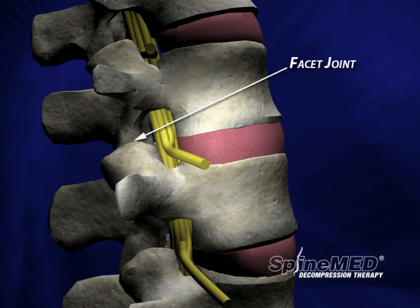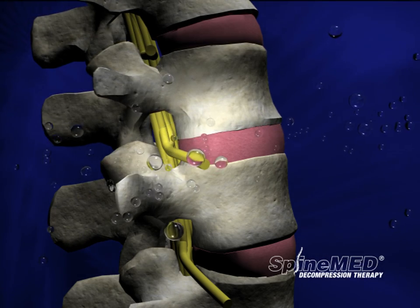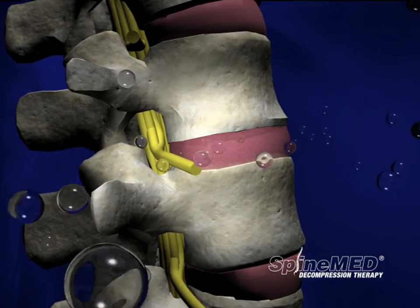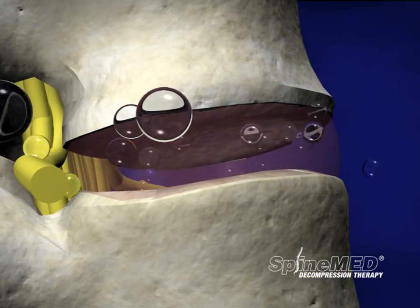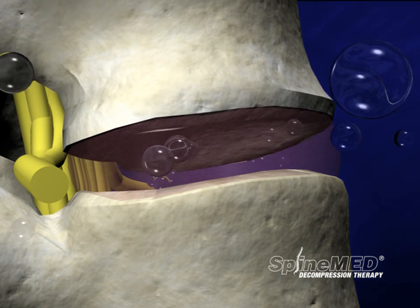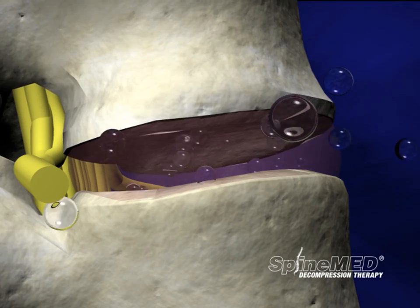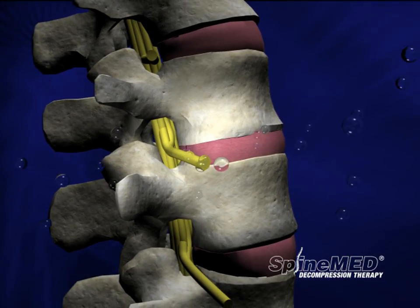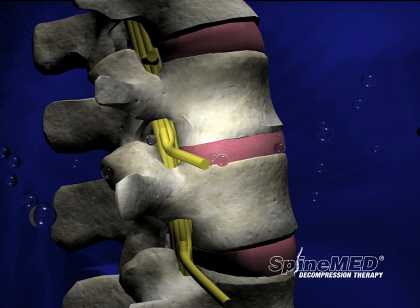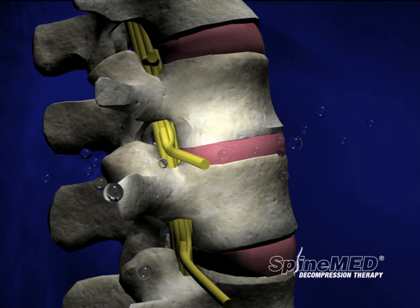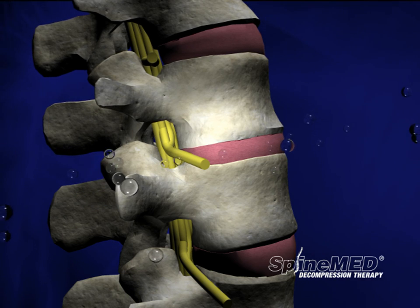The facet joints are located just behind the spinal nerve roots. It is at these joints that the vertebrae make contact as they are stacked upon one another. The disc relies on the transfer of fluids and nutrients from the vertebrae above and below, as well as the outer layer of the annulus, to stay healthy.